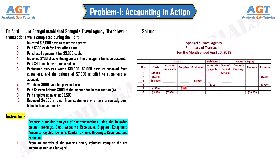Transaction 6: performed services worth $10,000. $3,000 cash is received from customers and the balance of $7,000 is billed to customers on account. Assets in the form of cash increase by $3,000, assets in the form of accounts receivable increase by $7,000, and revenue increases by $10,000.